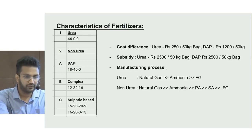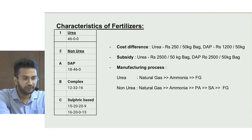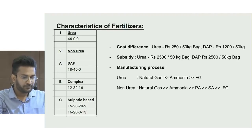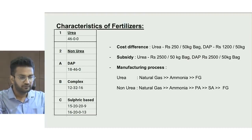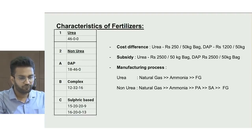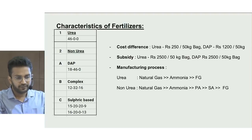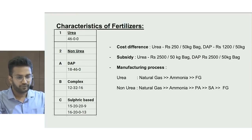Nitrogen provides rich green color and leafy growth to crops, phosphorus focuses energy on strong root development, and potassium enhances the overall growth of the plant. In terms of cost, a urea bag is close to Rs. 250 per 50 kg bag while the subsidy amount is almost 10x at Rs. 2,500. For DAP, the bag costs Rs. 1,200 per 50 kg while the subsidy is similar at Rs. 2,500 per 50 kg bag.